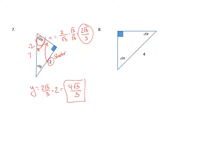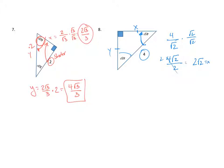For our last problem, we have 4 as the hypotenuse in a 45-45-90 triangle. Call the legs x and y. Since it's isosceles, x equals y. Going from the hypotenuse to a shorter leg across the 45, I divide by root 2. Rationalizing by multiplying by root 2 over root 2 gives 4 root 2 over 2, which simplifies to 2 root 2 for both x and y. Hopefully that helped — make sure to subscribe and thanks for watching.